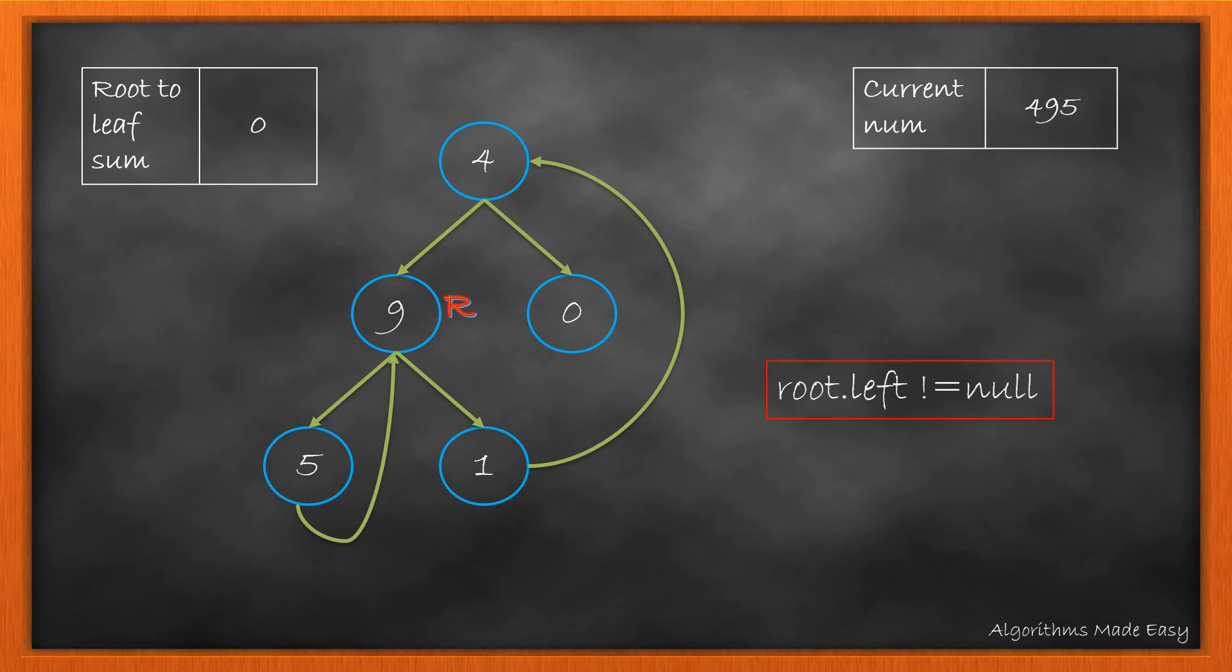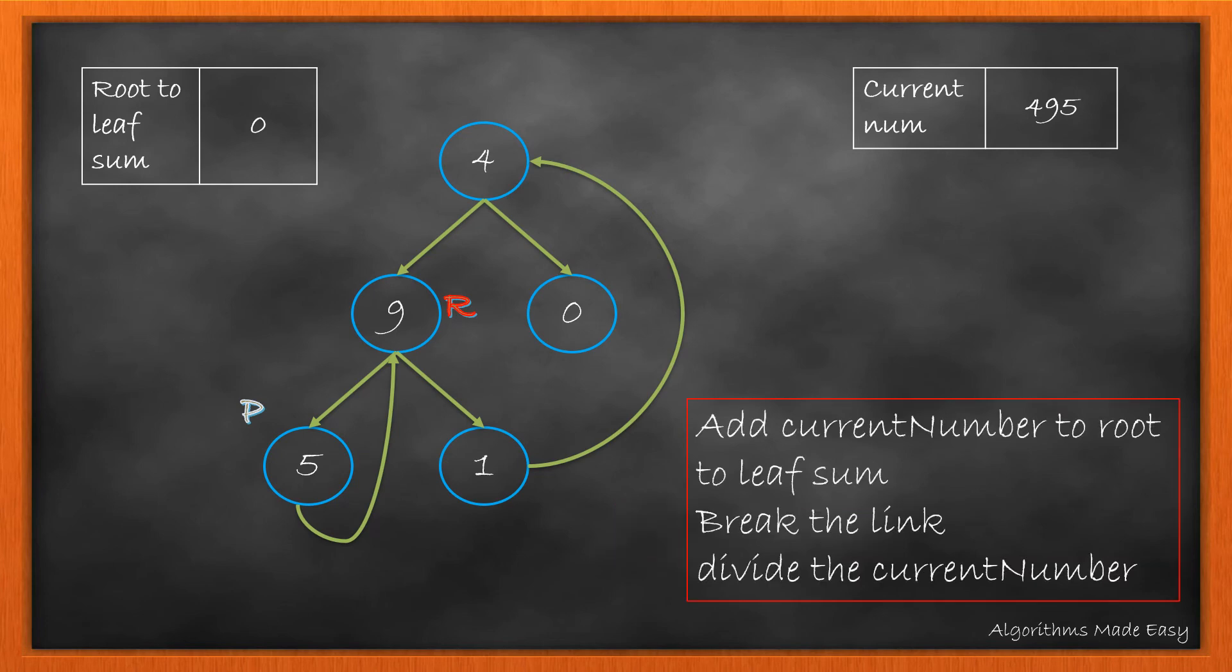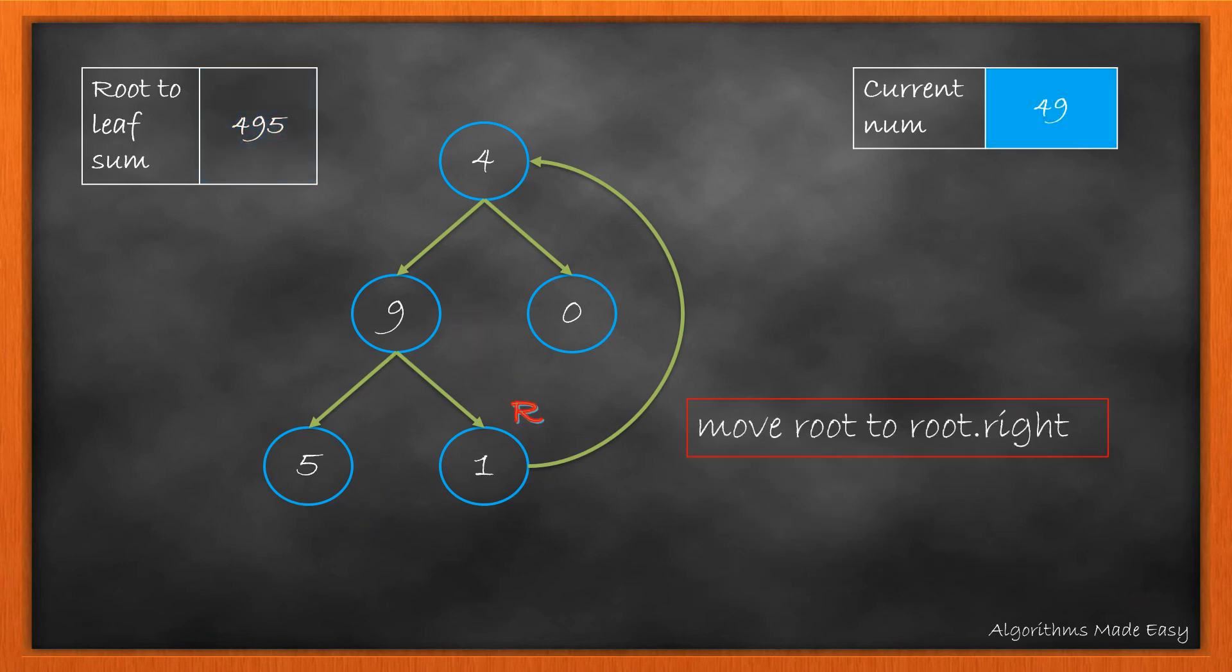We again check for root.left and then we find the predecessor. As predecessor.right is equal to root, we add the current number to root to leaf sum and then break the link. And then divide the current number. Now we move root to right.